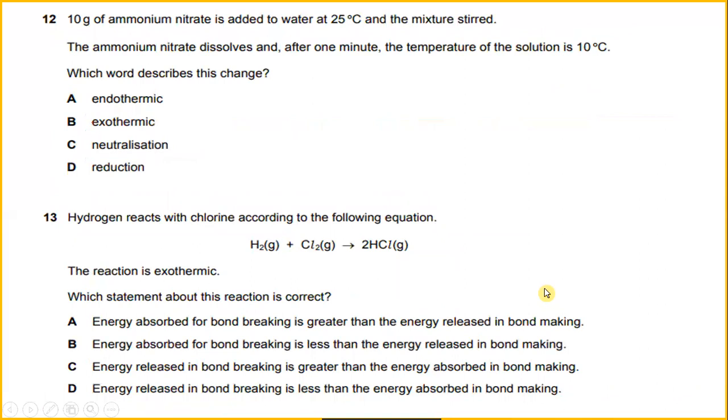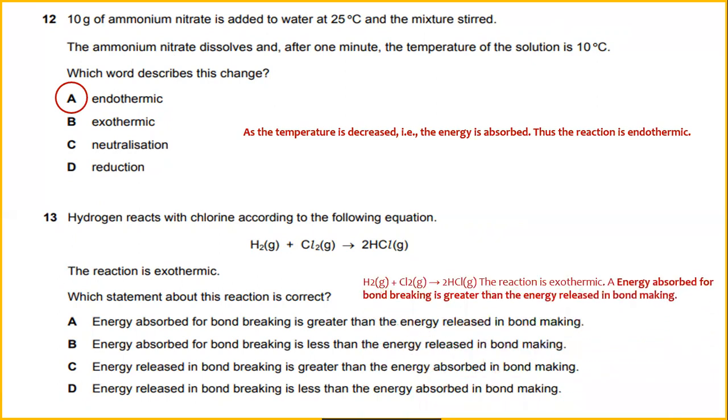The reaction is called endothermic. 10g of ammonium nitrate is added to water at 25 Celsius. And the mixture stirred. The ammonium nitrate dissolved. And after 1 minute, the temperature of the solution is 10 Celsius. Which would describe this change? As the temperature is decreased the energy is absorbed and thus this reaction is called endothermic. Hydrogen reacts with chlorine according to the following equation H2 plus Cl2 to form 2HCl. The reaction is exothermic. Which statement about this reaction is correct? This reaction is exothermic where energy absorbed for bond breaking is greater than the energy released in bond making. So the answer will be A.